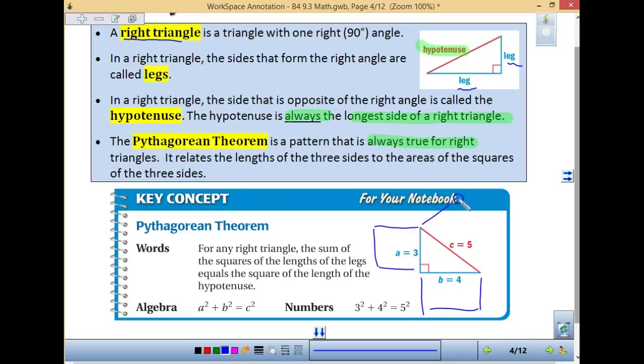So thinking about how we did that with our areas coming off each side, this one has an area of 25, 5 squared, an area of 9, and the area of 16. So 9 plus 16 does equal 25.